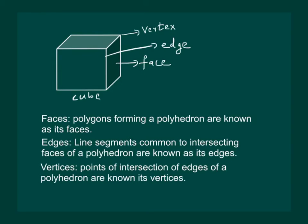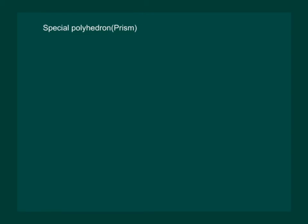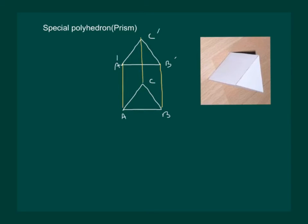Let us discuss special type of polyhedron called prism. Consider two triangles, say ABC and A' B' C' and both of them are congruent. Let us join A to A', B to B' and C to C'. If we imagine that it is a solid structure, it would look something like this and it is called a triangular prism.